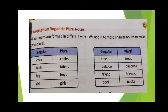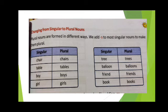For example, singular is 'chair' (C-H-A-I-R) and its plural form is 'chairs' (C-H-A-I-R-S). Same with 'table' (T-A-B-L-E) — plural is 'tables' (T-A-B-L-E-S). We add S to the singular noun to make it plural. Like: boy-boys, girl-girls, tree-trees, balloon-balloons, friend-friends, book-books.